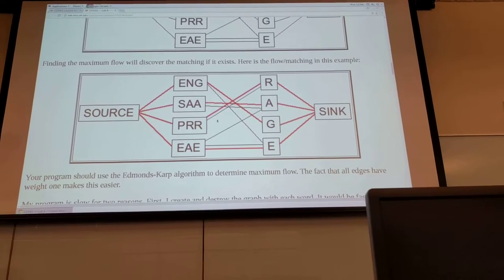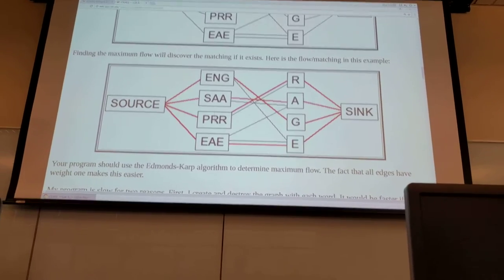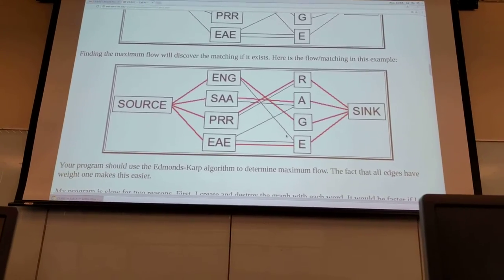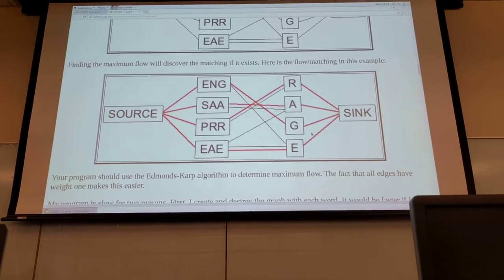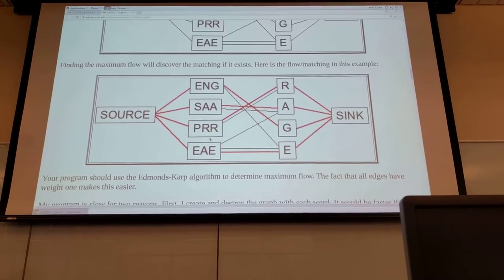If you calculate the maximum flow you get maximum flow through these edges and then you can see that since the maximum flow from the source to the sink is full, you have full edges of weight one connecting it, then you know that you can spell rage using the letters on the die.